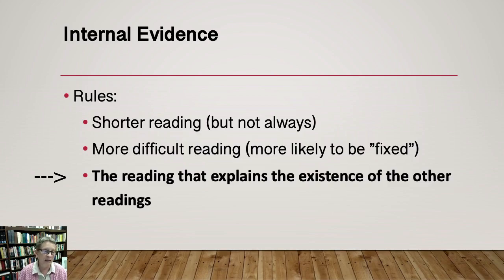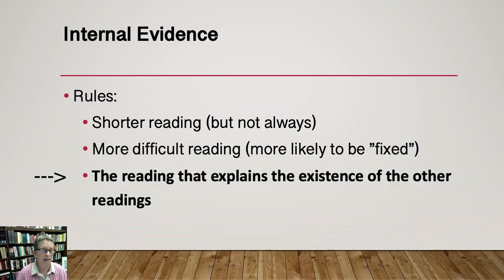This rule is the most important one: the reading that explains all the other readings is most likely to be the oldest form of the text, or the Ausgangstext. In other words, if one reading — because it was more difficult or for some other reason — causes the other readings to make sense as adjustments, then it's most likely to be the Ausgangstext.